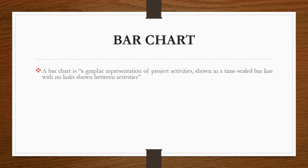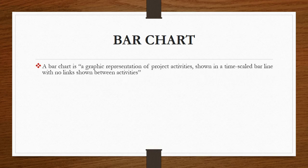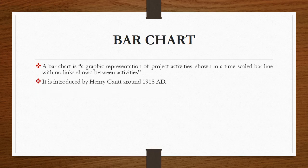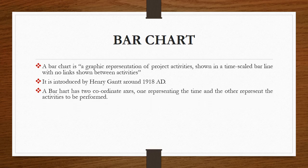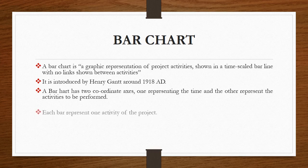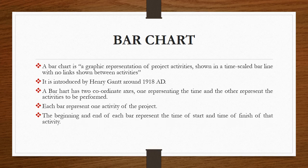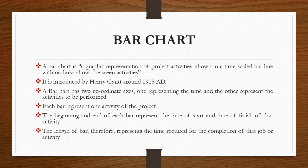Bar Chart. A bar chart is a graphical representation of project activities shown in a time scaled bar line with no links shown between the activities. It is introduced by Henry Gantt around 1918 AD. A bar chart has two coordinate axes, one representing the time and the other represents the activities to be performed. Each bar represents one activity of the project. The beginning and end of each bar represents the time of start and time of finish of that particular activity. The length of bar therefore represents the time required for the completion of that job or activity.